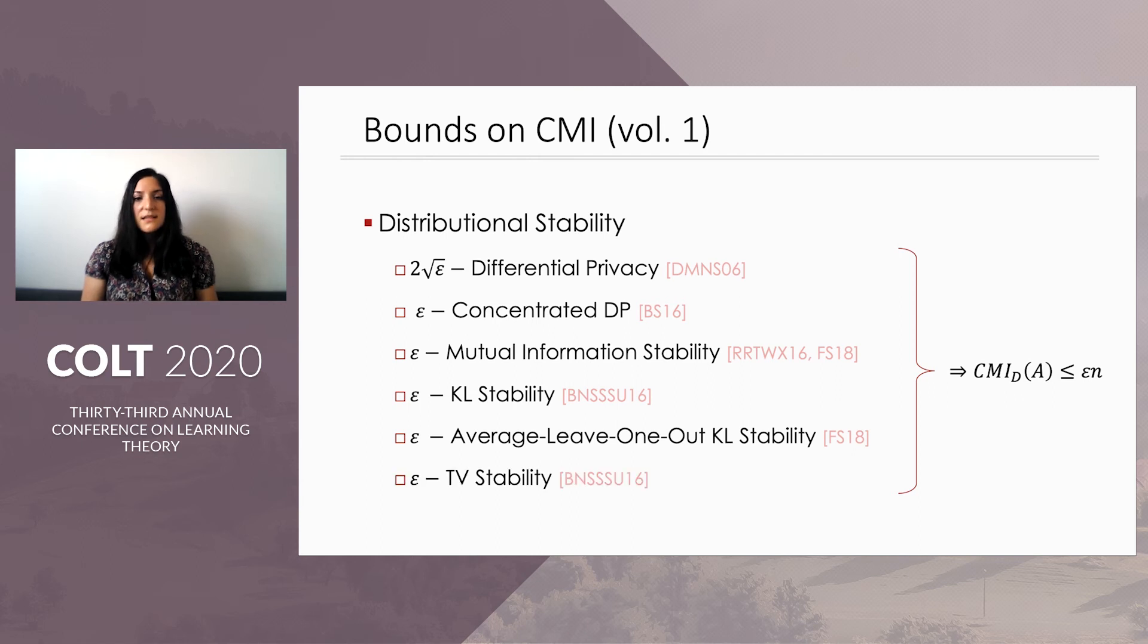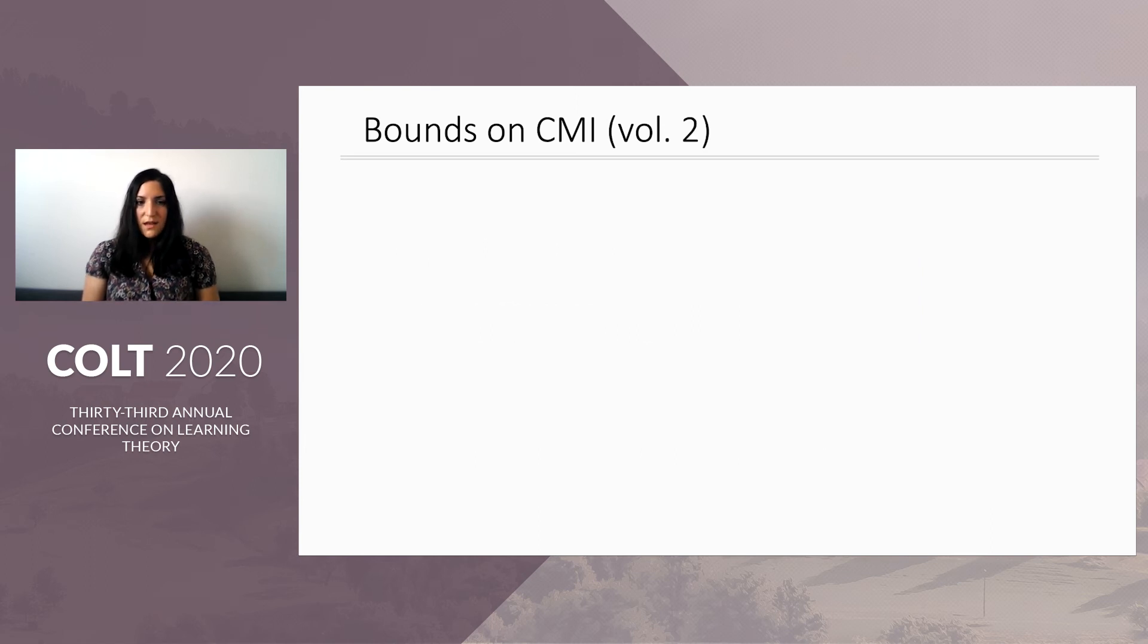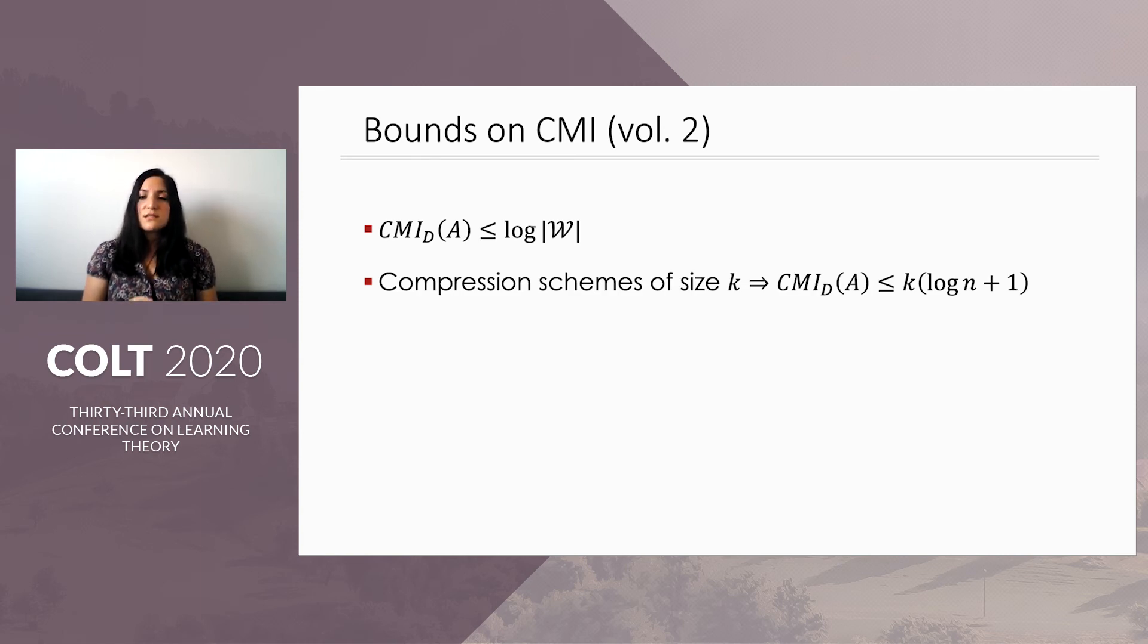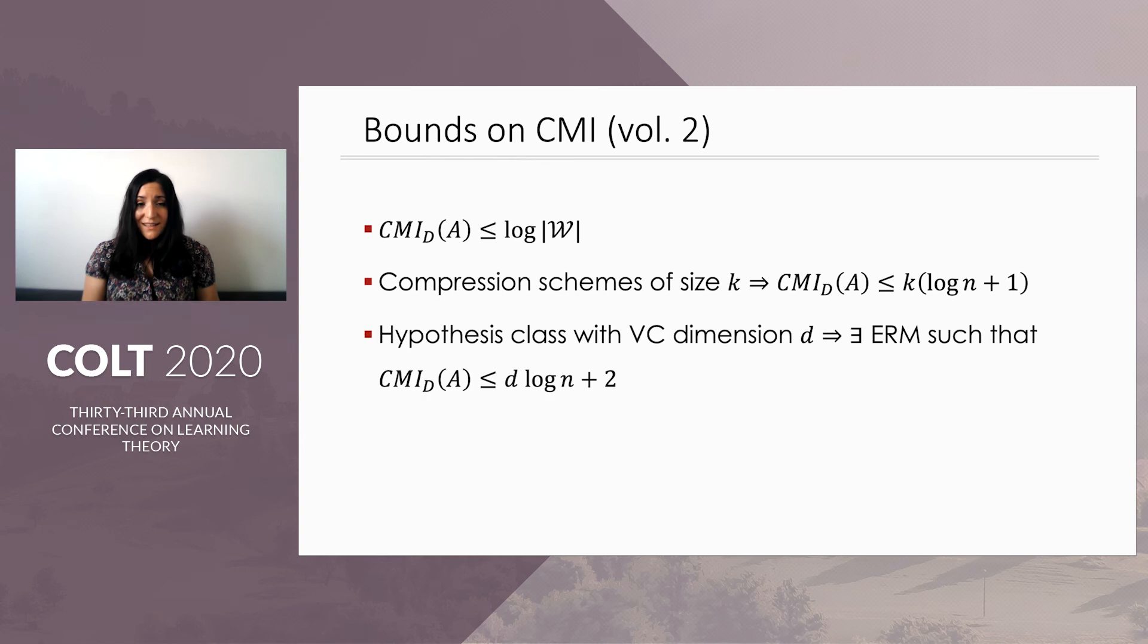Now, what we add to this list is epsilon total variation stability, which also implies the same bound, and ultimately this is what ties approximate differential privacy into the CMI framework. We also still have the generic bound of log of the size of the output space. And now we add to those compression schemes, proving that an algorithm that is a compression scheme of size K has CMI at most K log n. And finally, we incorporate uniform convergence by proving that for any hypothesis class with VC dimension at most D, there exists an empirical risk minimization algorithm with CMI at most D log n.